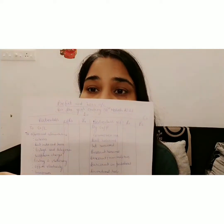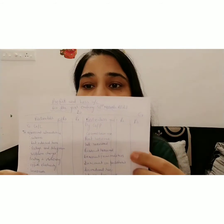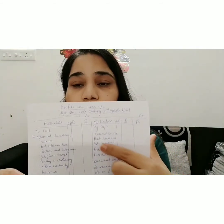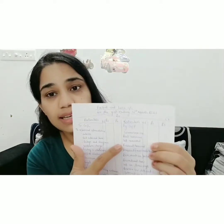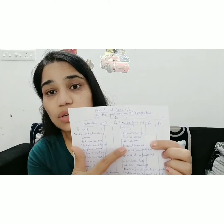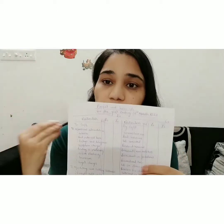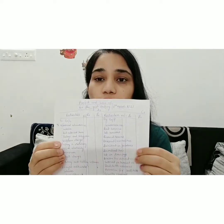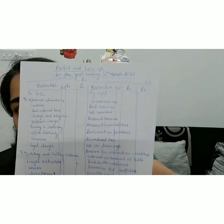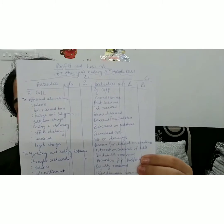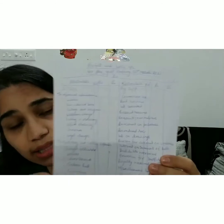Next on the credit side: rent received — if a company is receiving any kind of rent, it is written here. Interest received, and discount received on any purchases, are also noted on the credit side. Discount from creditors — creditors are those from whom we get money to run the business; if those creditors provide us a discount, that discount is noted here. Discount on purchases received is also credited in the profit and loss account.